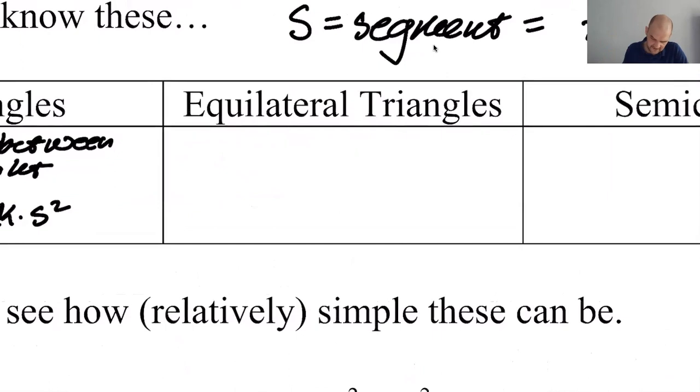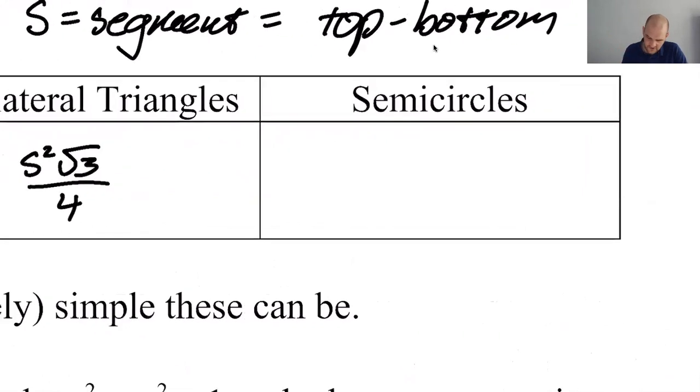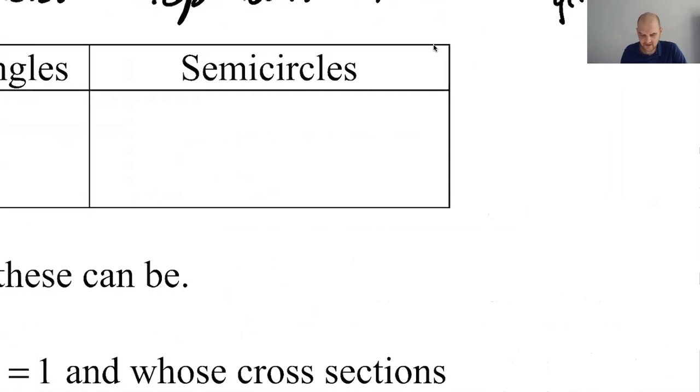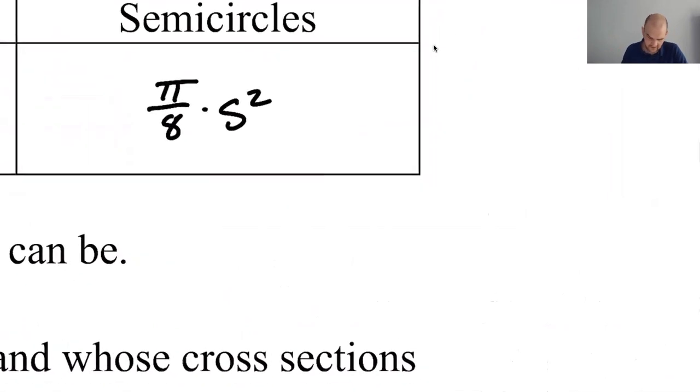Equilateral triangles in general are S squared root three over four. Definitely memorize that one. Semicircles are the one that you should, no matter what, memorize. So here's what it is. It's going to be pi over eight times S squared. Let me explain why it's pi over eight.